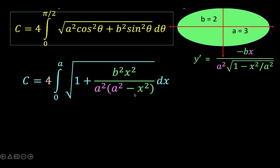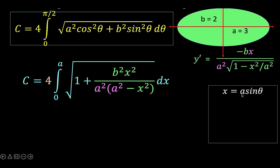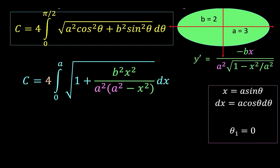At this point, we perform trigonometric substitution. We let x equal a times sine theta. It follows that dx over d theta equals a times cosine theta, so dx equals a cosine theta d theta. For our limits of integration, we are in the first quadrant: we start at theta equals 0 and stop at theta equals pi over 2. With these substitutions, let's go back to the formula for C.